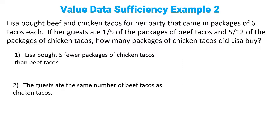Step one: we always go back to the question, figure out exactly what we've been asked to find, and write it down. In this case, we're being asked to find the exact value of C. Next step, we go back into the question and write down any equations we've been given. In this case, we're told that B plus C equals T.